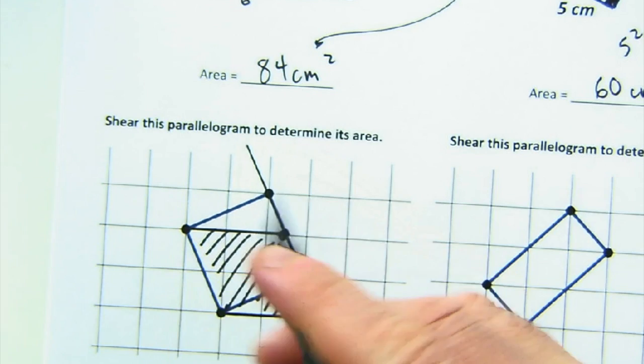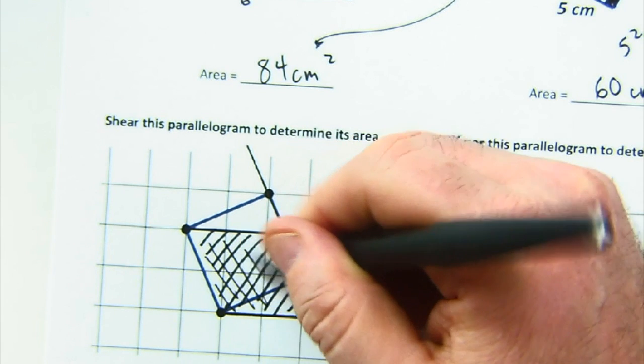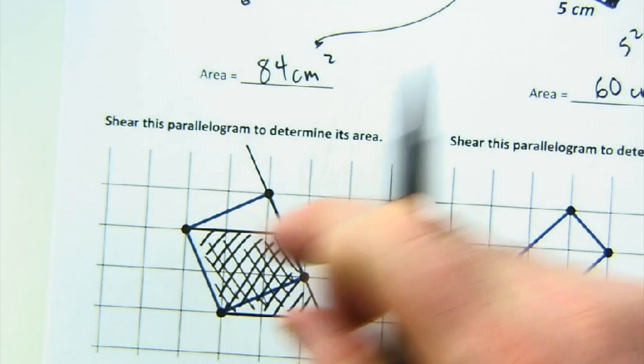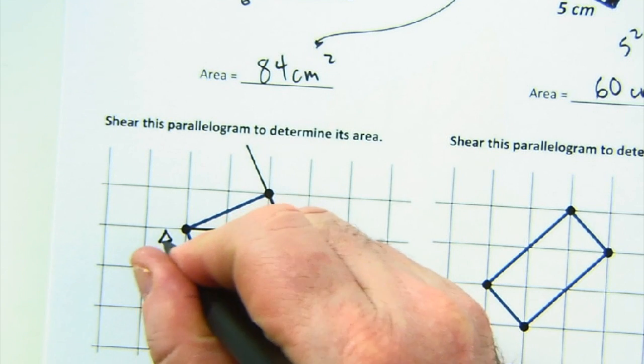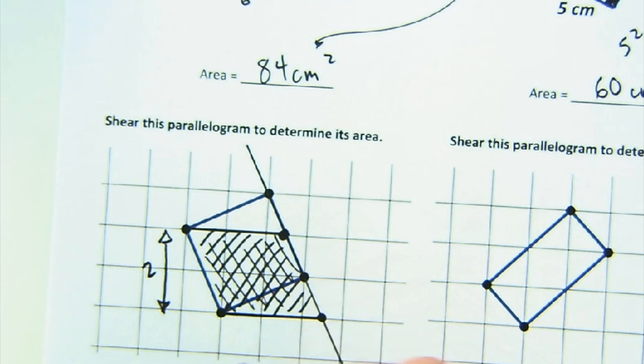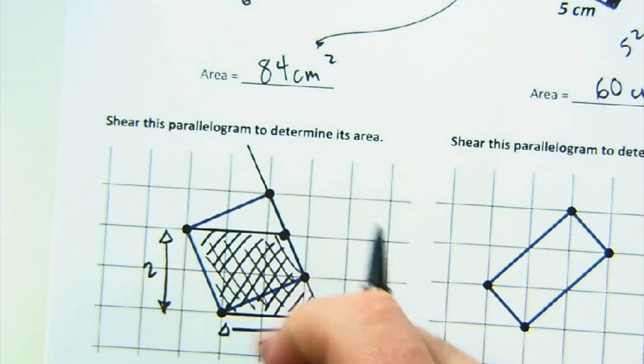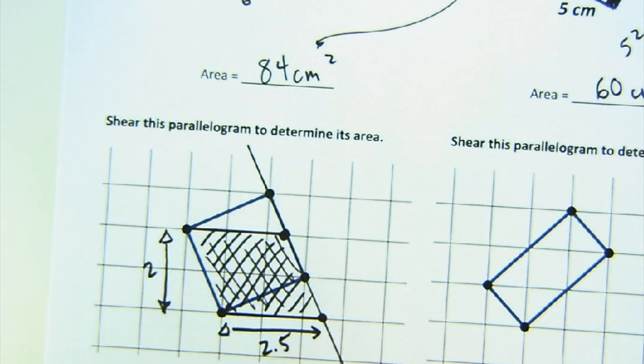And now I created a nice little parallelogram that I can easily calculate, which is a height of 2. So, the height is 2. And the base is 2 and a half. So, base times height, so this is a 5 centimeter squared relationship if this is a centimeter grid.